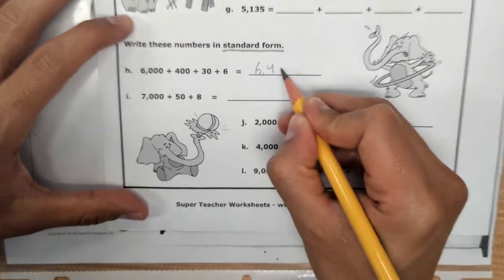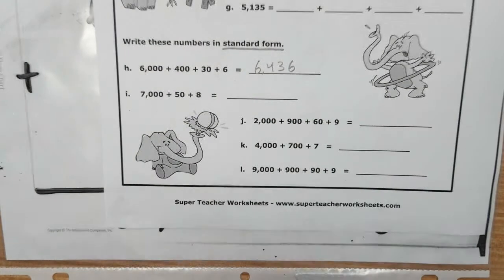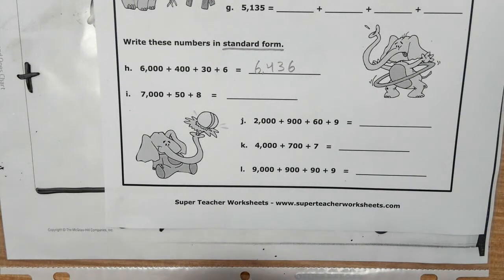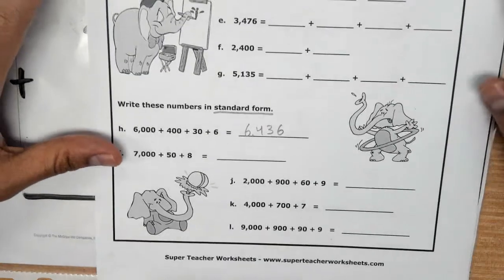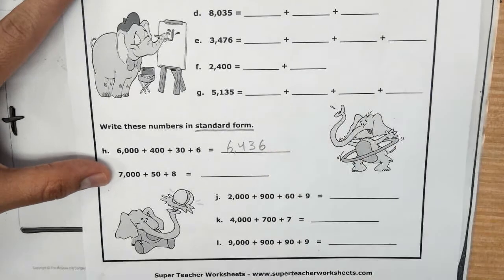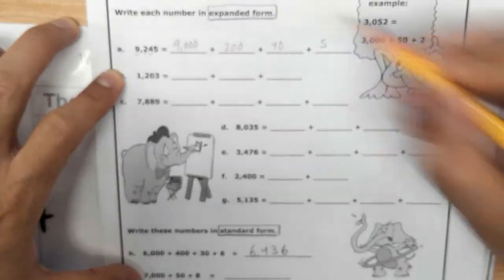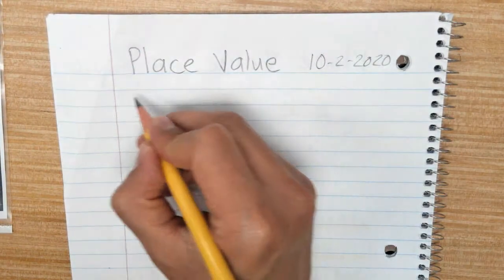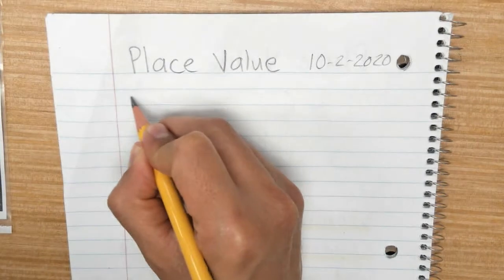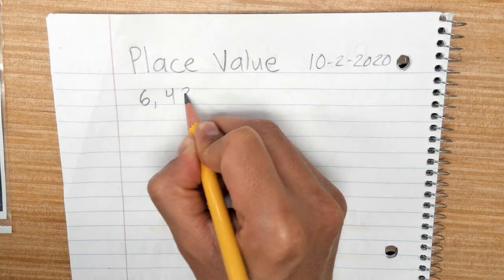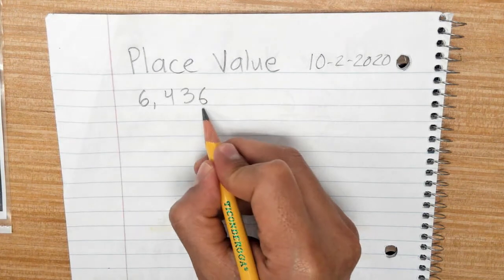So my answer is six thousand four hundred thirty-six. That is our answer for this morning. So this is what we're going to do today — we're going to review our work from yesterday. We're writing numbers in standard form and we're writing numbers in expanded form. Let's go back to our notes. We're doing place value, and we wrote the number six thousand four hundred thirty-six.